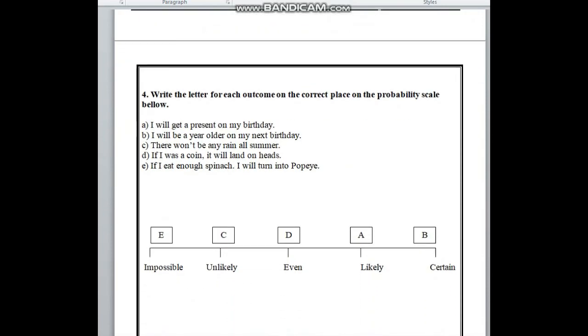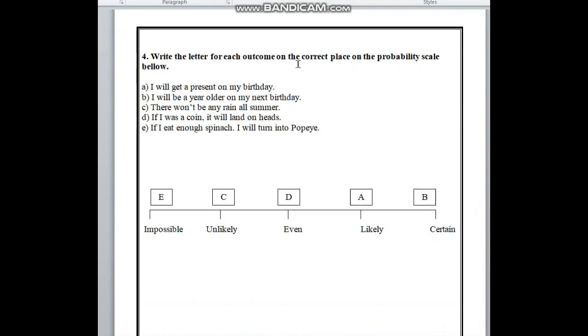In number 4, here is write the letter for each outcome on the correct place on the probability scale below. Here is the probability scale. In this scale, we can see here impossible, unlikely, even, likely and certain.